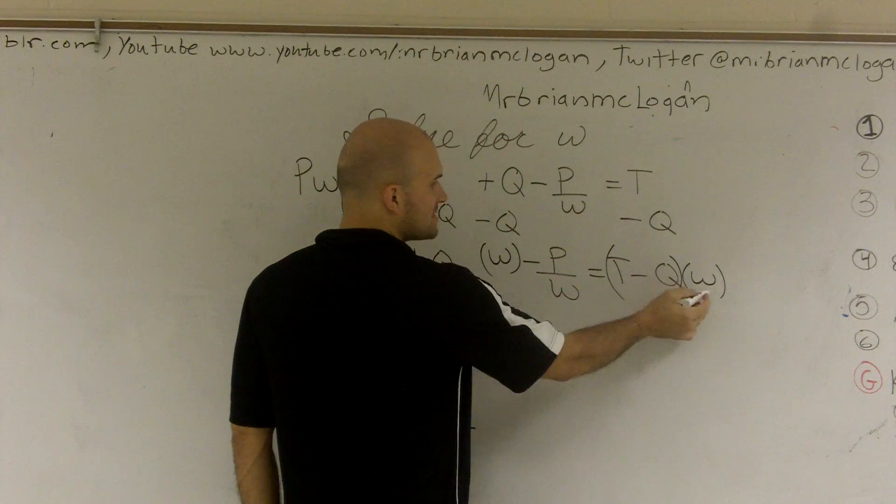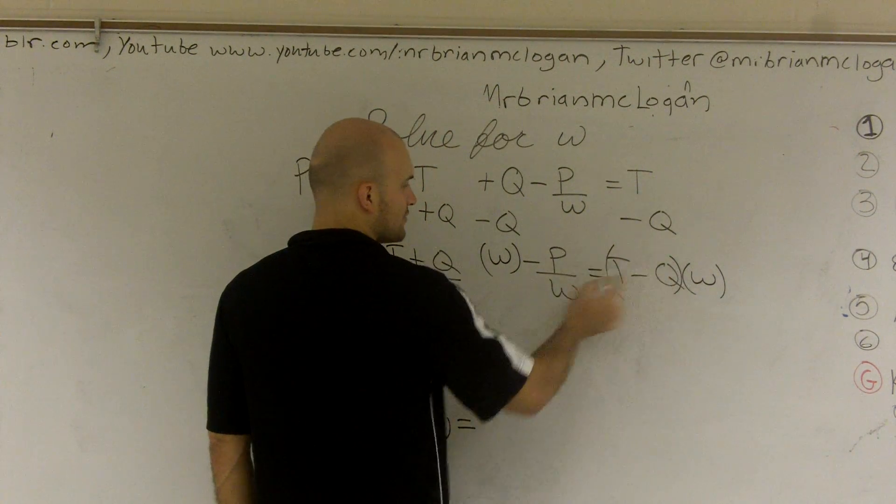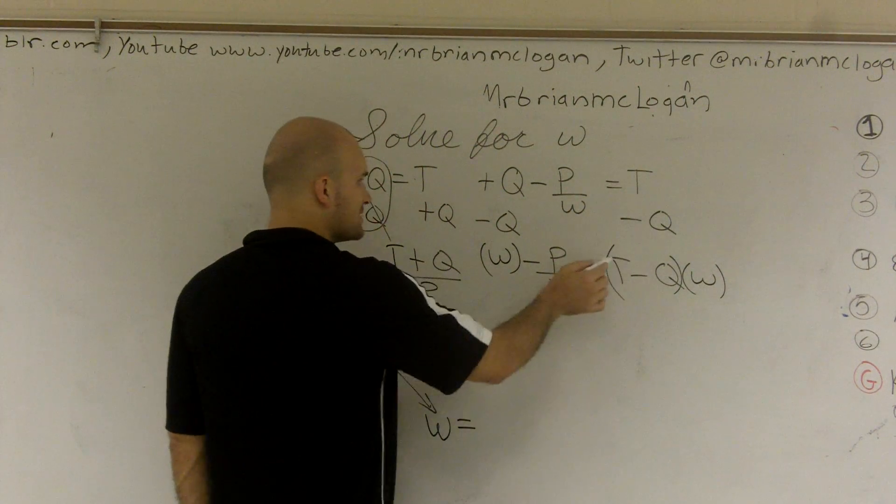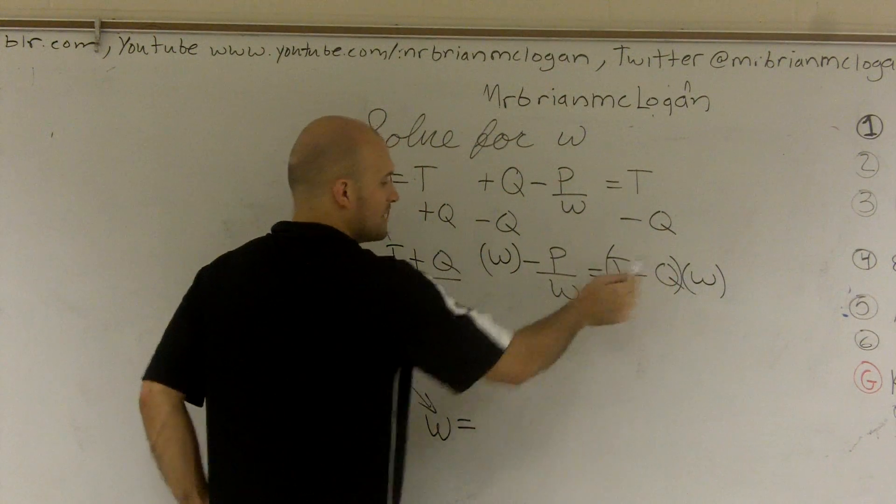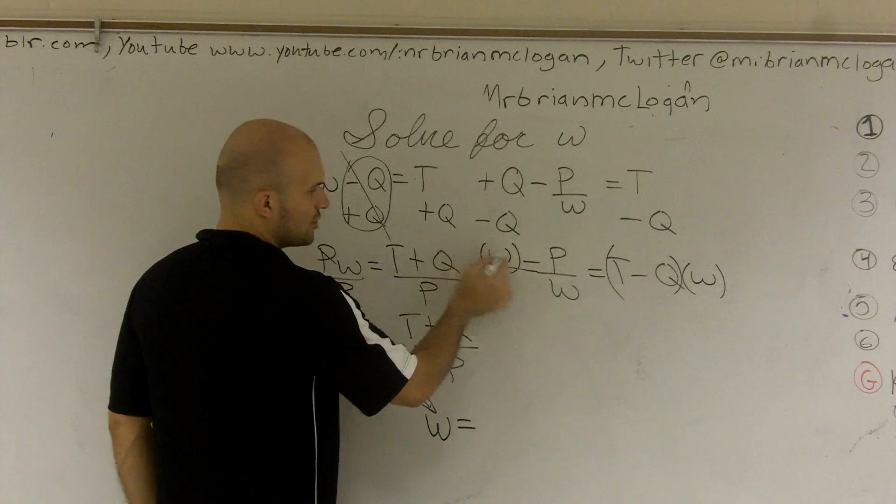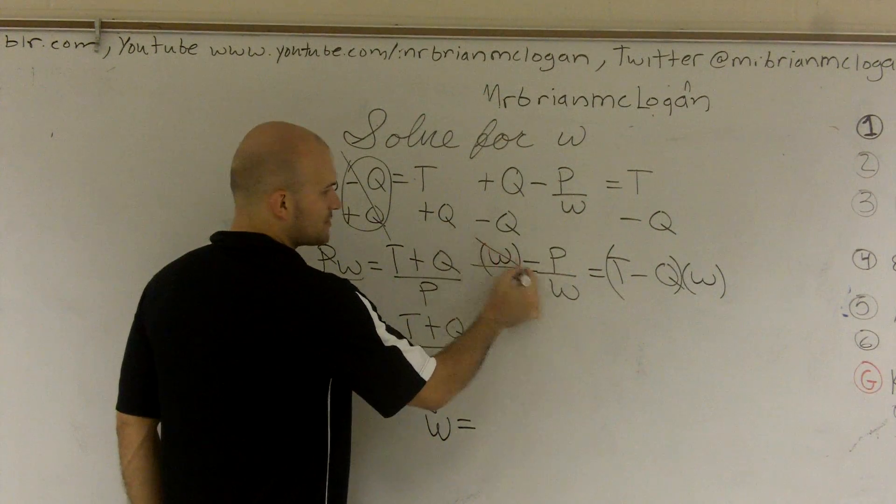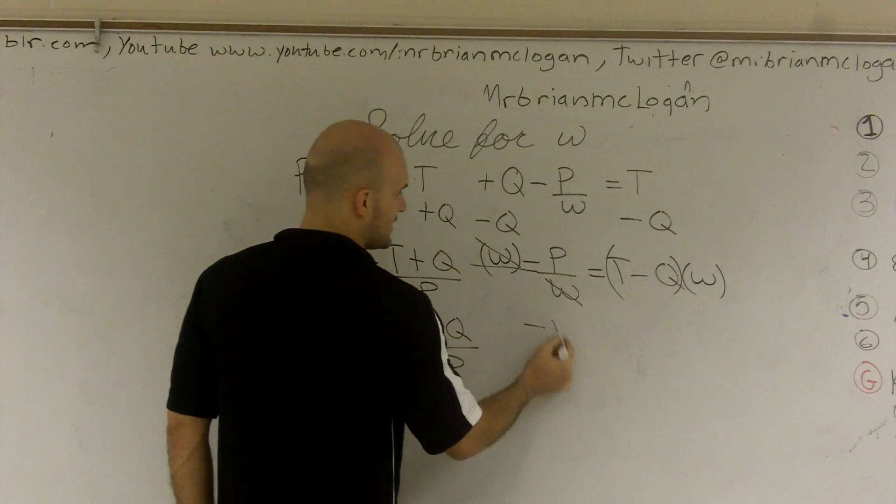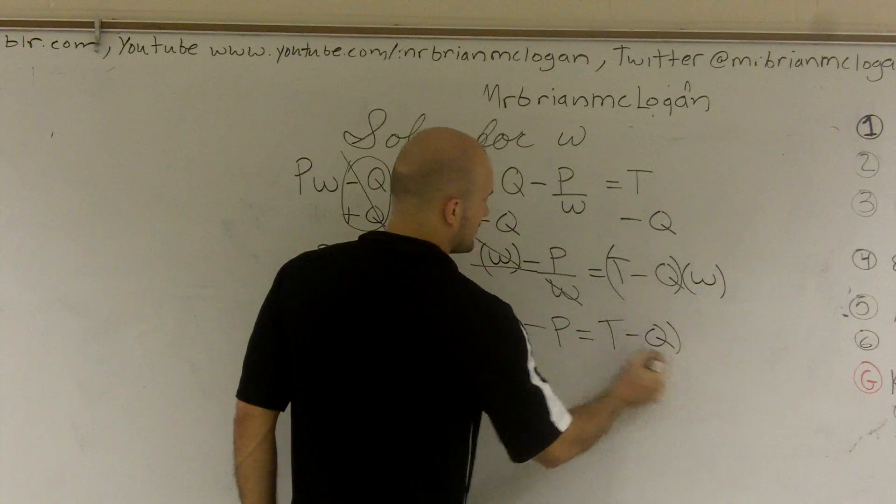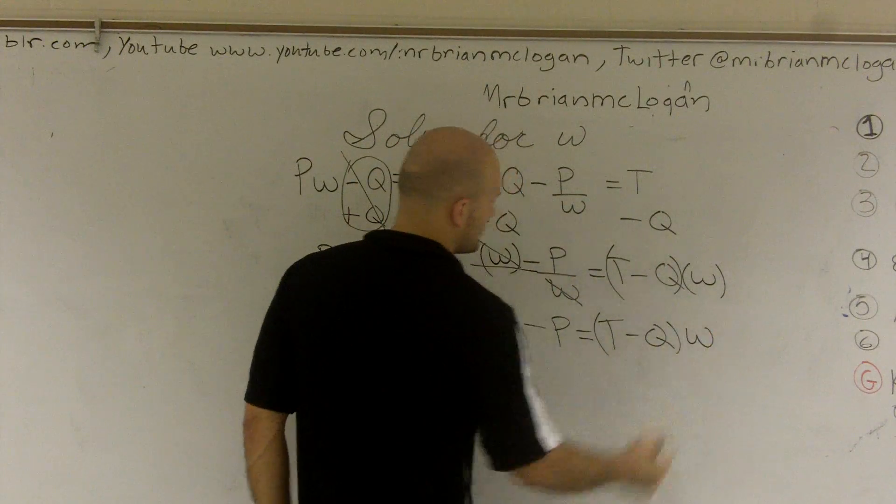I'm going to put parentheses on here representing, I'm multiplying this w times everything over here. So just make sure you don't multiply the w times the q or the w times t. You have to represent your multiply by both of them. Well, this is going to show I'm dividing w divided by w, which will cancel out. So I'm left with the negative p equals t minus q times w.